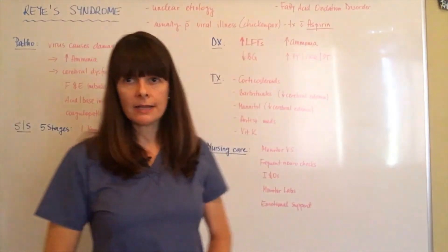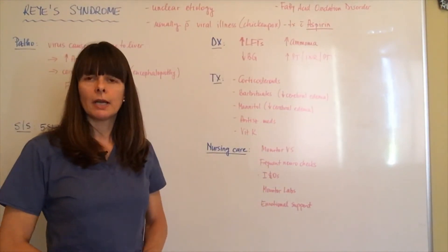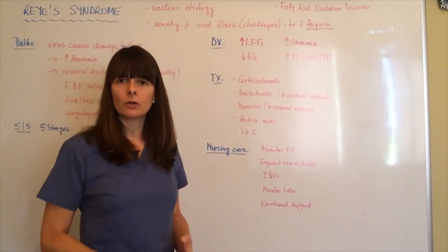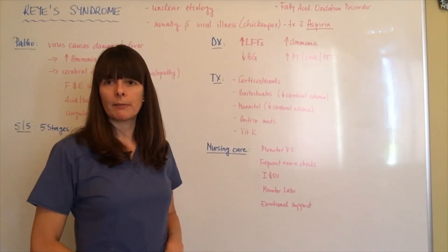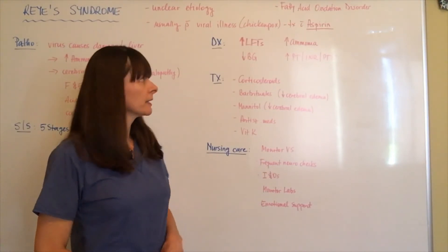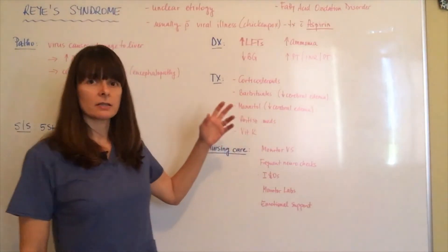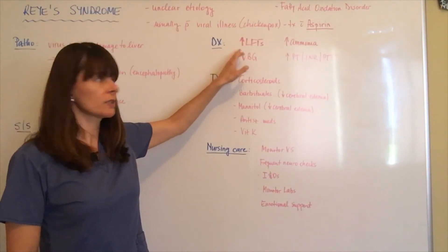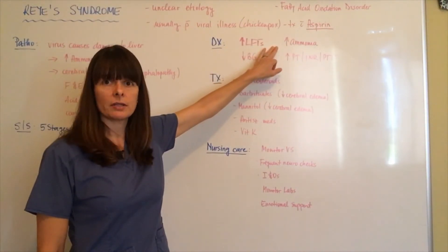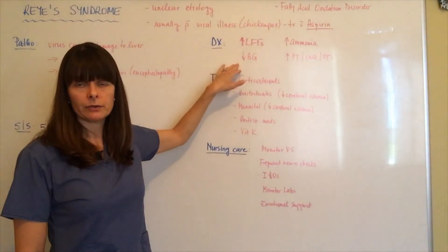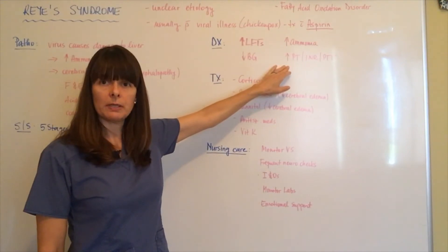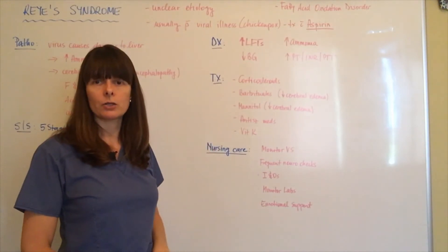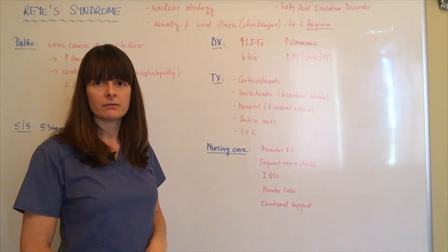Diagnostic tests for Reye's syndrome usually include a thorough history and physical to find out about the recent viral illness as well as the administration of aspirin. Diagnostic studies will show increases in liver function tests as well as increased ammonia levels. Blood sugar will often be low as well. Coagulation studies such as PT, INR, and PTT will be altered because of the coagulopathies that stem from the liver dysfunction.